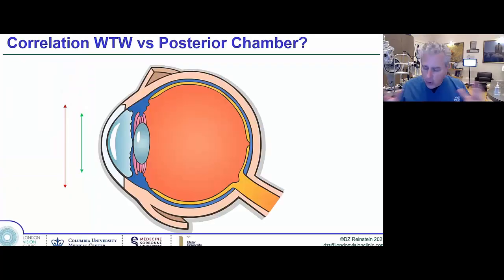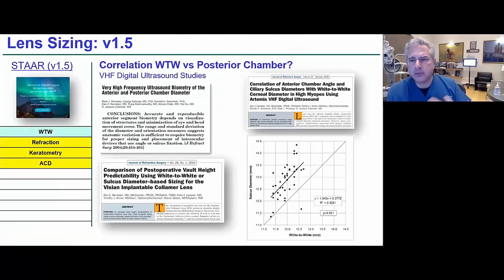It's all about this correlation between white-to-white versus the posterior chamber dimensions, which is where the lens is actually going to go. Because of the correlation coefficient being low, we published a paper clinically with the Artemis I in London, and you can see that the coefficient is 0.32. It's just a very low correlation.